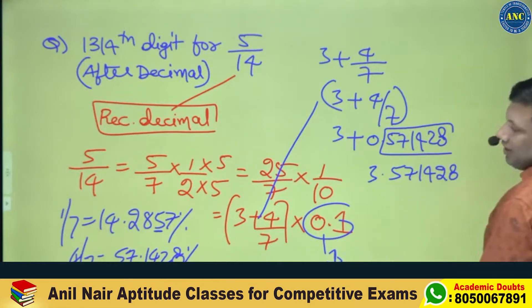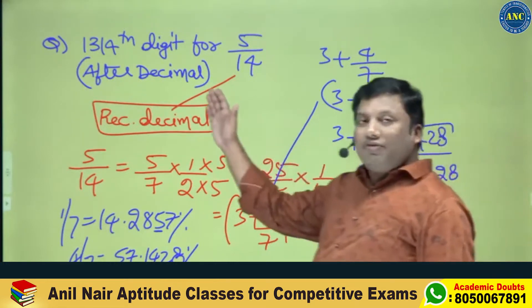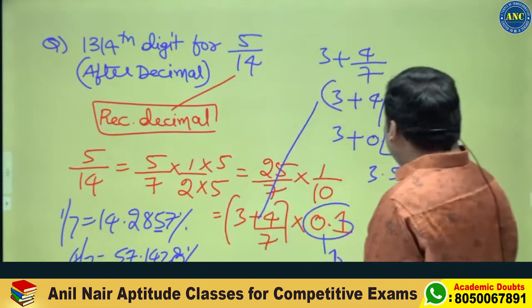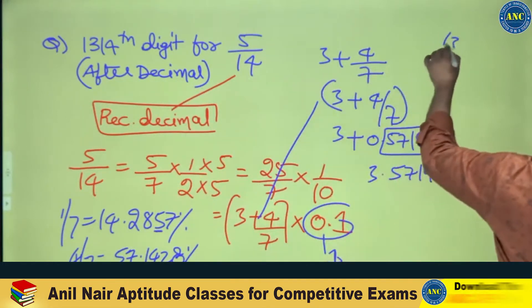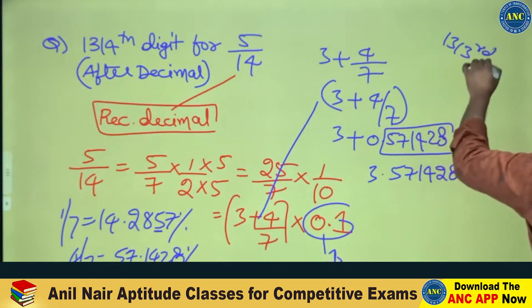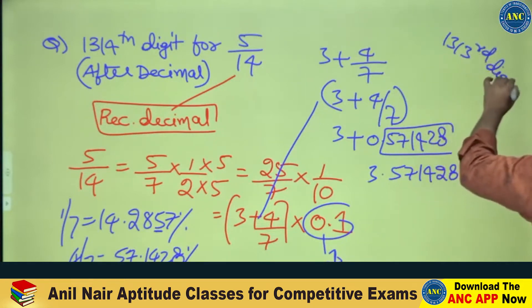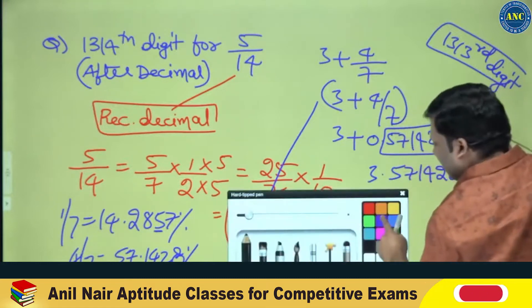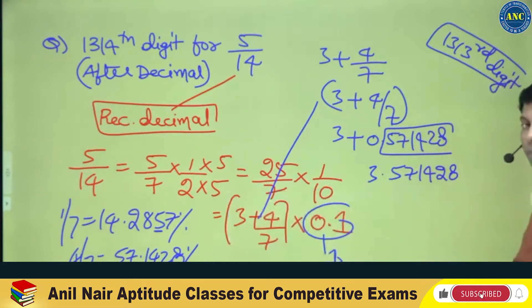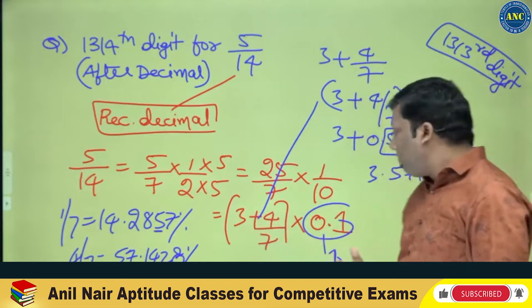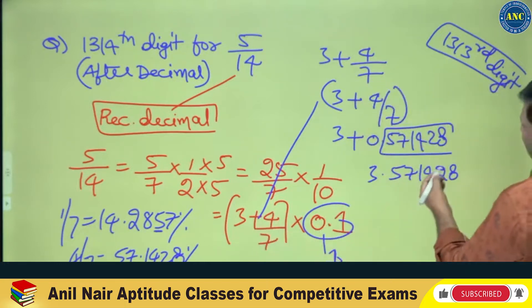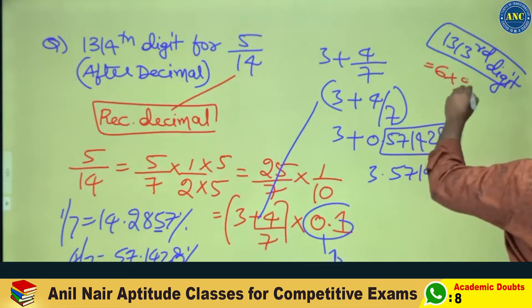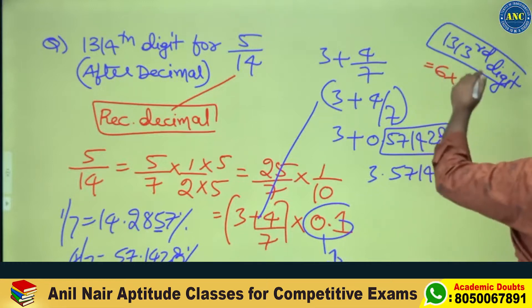Already 1 digit is over from the 0.1 factor. So out of the 1314th digit, 1 digit got over — the remaining digit we have to find is the 1313th digit. Because after the dot, 1 digit came in point 1, so we need the 1313th digit in the repeating block.